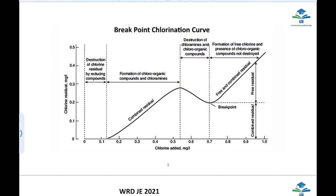We have a breakpoint chlorination curve here. The x-axis represents chlorine added, and the y-axis represents chlorine residual produced. We have a zero pointer. As we add chlorine, the chlorine residue will reduce.